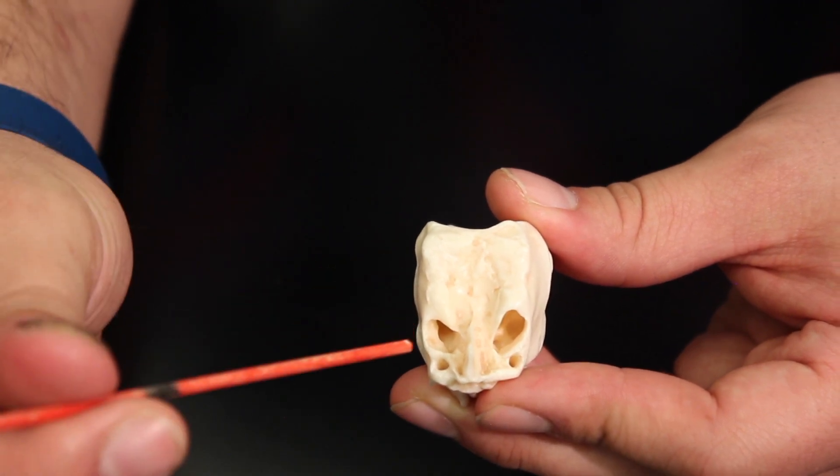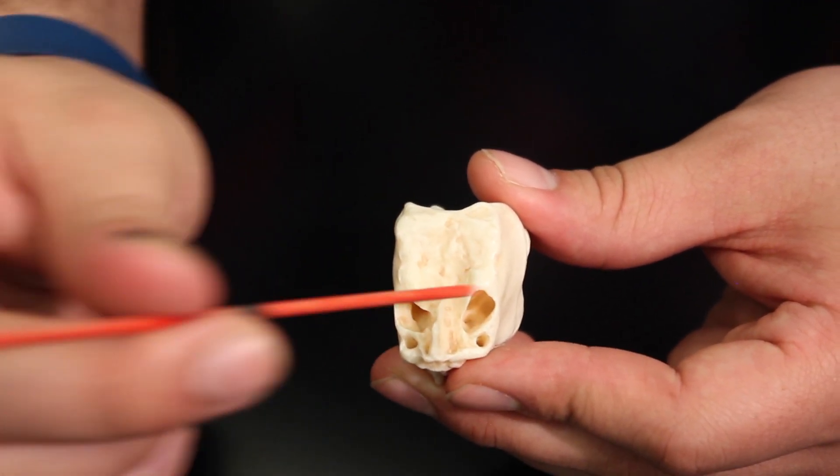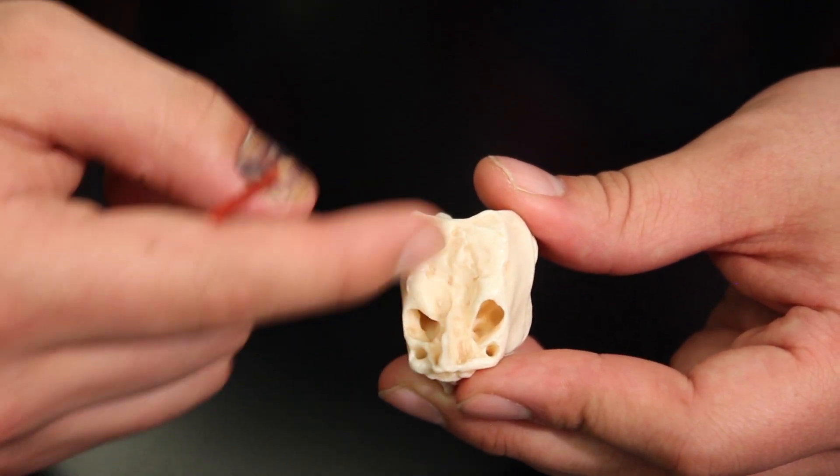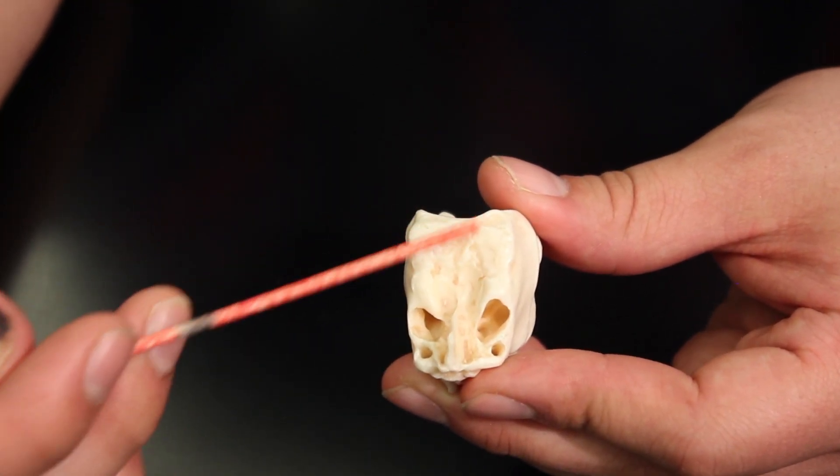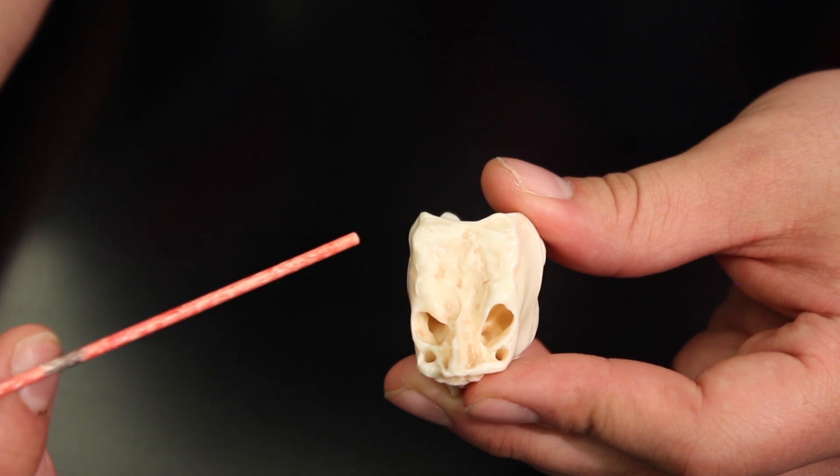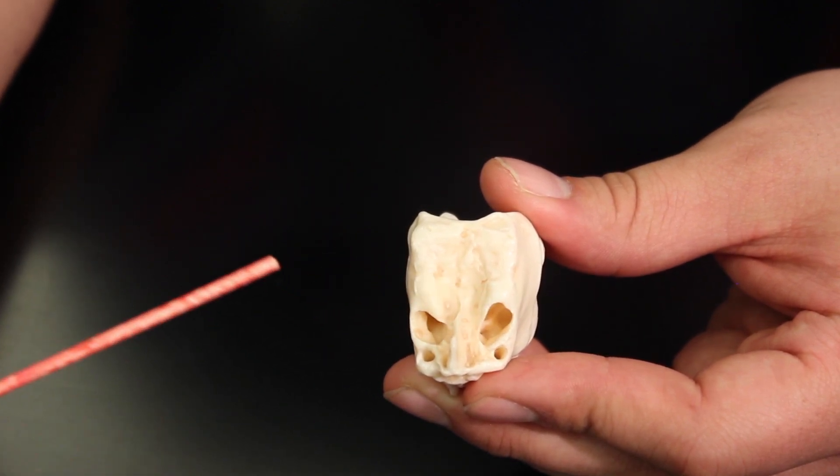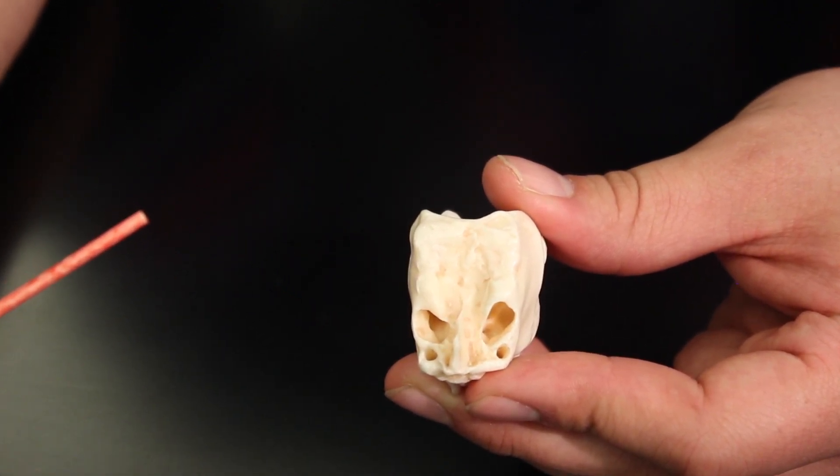Alright, and then inside of this, just like we talked about with the sphenoid, it has these little ethmoidal air cells, which is where, again, that's the hollow cavity there that can contain some mucus. And that's going to be called the ethmoid sinus. And again, that would actually be a paranasal sinus, meaning that it drains into the nasal cavity.